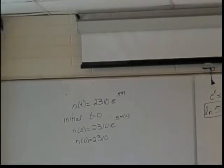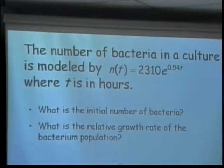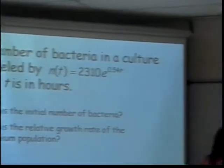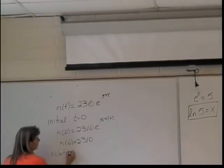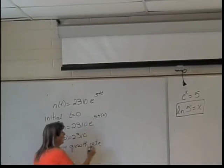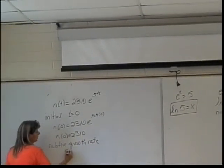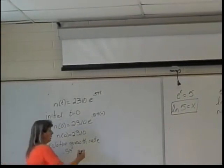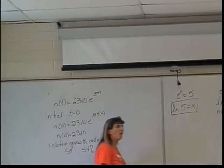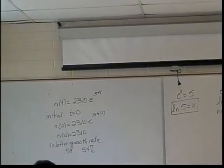What is the relative growth rate of the bacterium population? The 0.54. You can just read that off of the equation. It's 0.54, and if you need to change that to a percent, that would be 54%. They're growing by a lot. I don't want to have those bacteria.